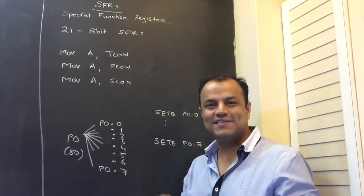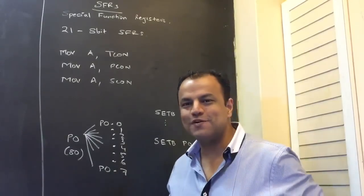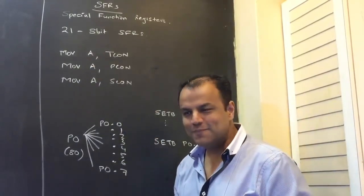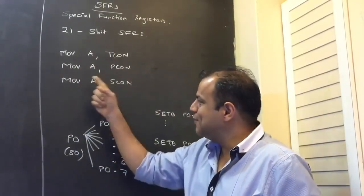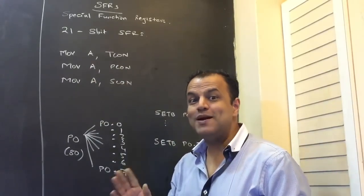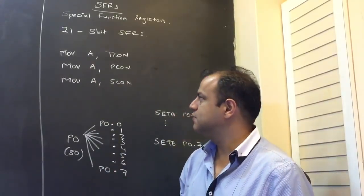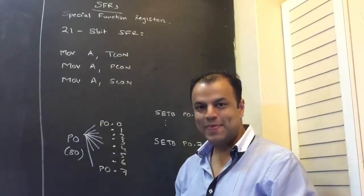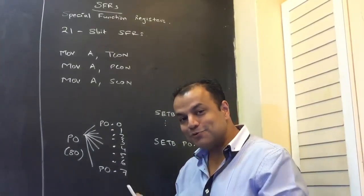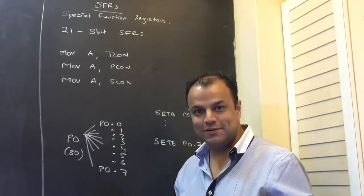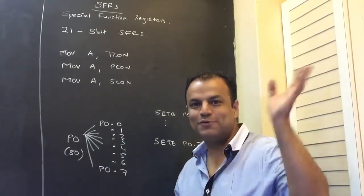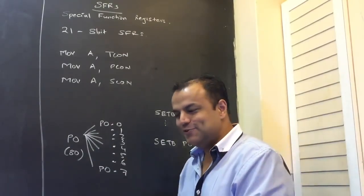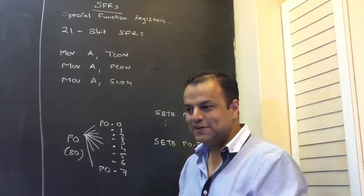Every register causes a different opcode. An opcode is the binary code of an instruction. There will be an opcode for MOV A, TCON; an opcode for MOV A, SCON — meaning there will be 21 opcodes just for MOV, because there are 21 SFRs. Then 21 opcodes for ADD, 21 for subtract — like this you will run out of opcodes. There are not so many opcodes that you can afford to give 21 to every instruction.